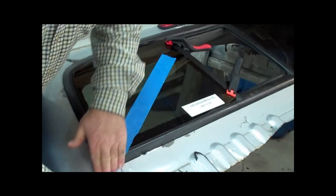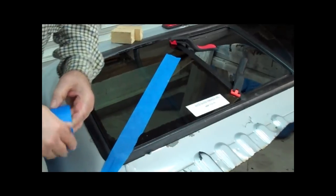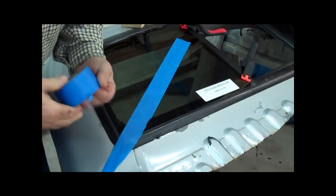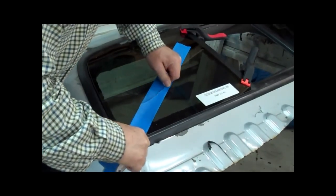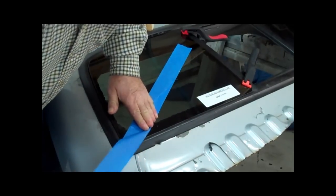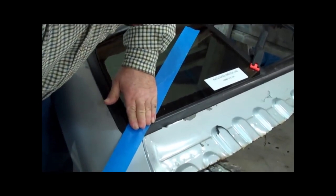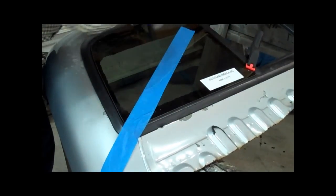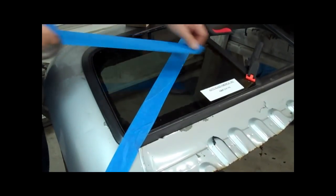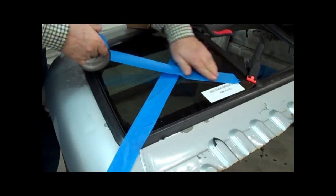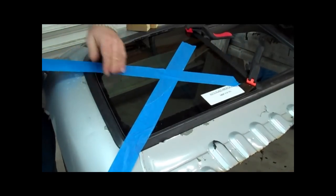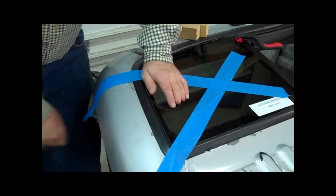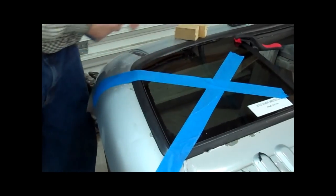And make sure that when you put this tape on that you don't pull the window over. Just put the tape on, push down, and don't pull it because you might pull the window over. We don't want to lose that gap over there. So putting this piece on, come over to the edge, push the edge down, push the tape down, and leave it like that.